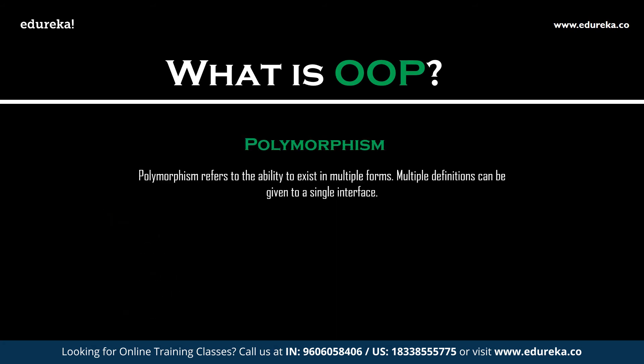Polymorphism refers to the ability to exist in multiple forms. For example, if you have a class named vehicle, it can have a method named speed, but you cannot define it because different vehicles have different speeds. So all you can do is declare the speed method, and the definition will be present in the subclasses that inherit it. Polymorphism can either be static or dynamic. Static polymorphism, or static binding, is a kind of polymorphism that occurs at compile time. An example of compile time polymorphism is method overloading — a feature of OOP which makes it possible to give the same name to more than one method within a class if the arguments that are passed differ.